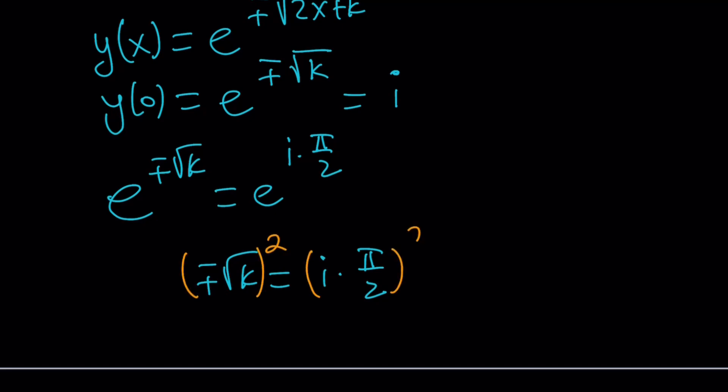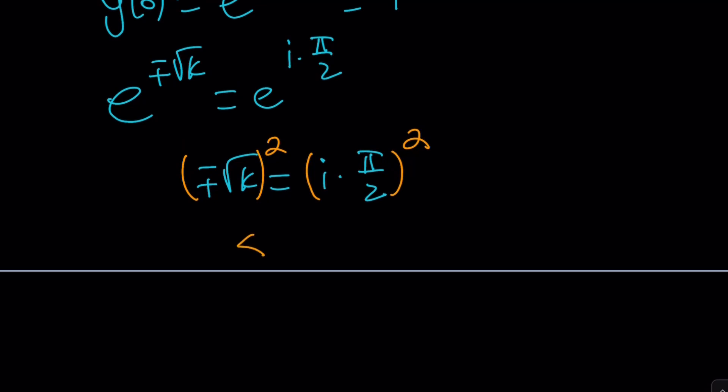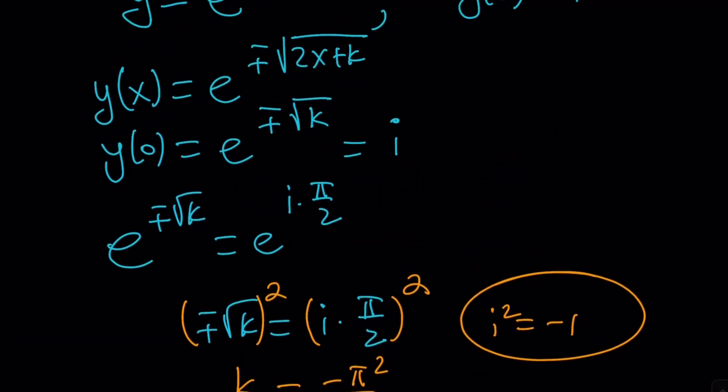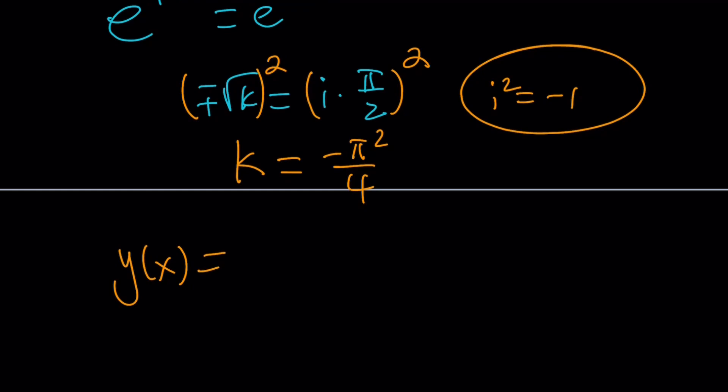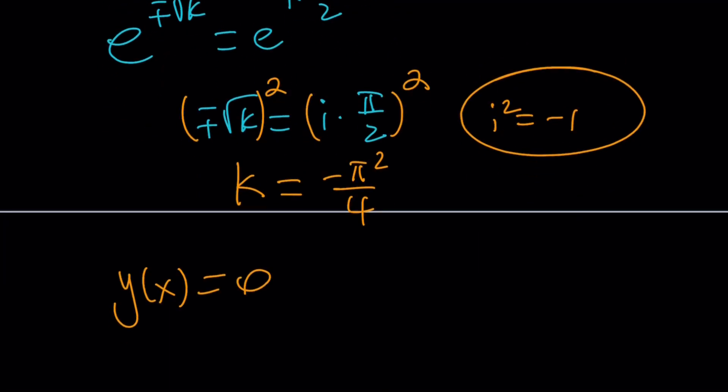So now when you go back and plug it in, you get y of x can be expressed as e to the power plus minus the square root of 2x plus k, which is minus pi squared over 4 for this particular case. And this brings us to the end of this video.